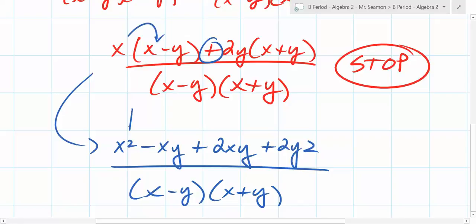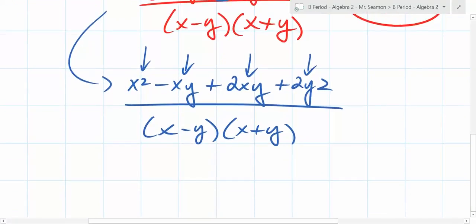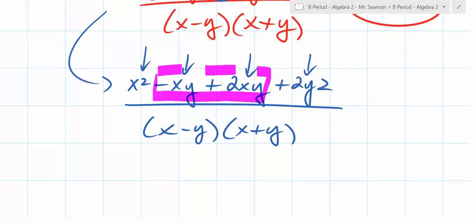What's X times X? X squared. X times negative Y? Negative XY. 2Y times X, 2XY. There it is. So I multiplied it out. You see this right here? You can combine those, right?